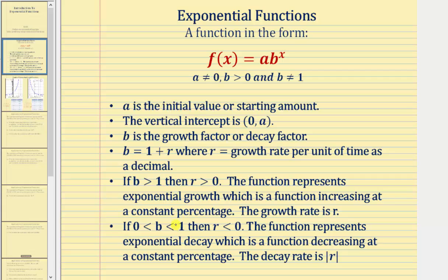If the base b is between zero and one, that means r, the growth rate, would be negative or less than zero, and therefore the function represents exponential decay — a function decreasing at a constant percentage — and the decay rate is equal to the absolute value of r.